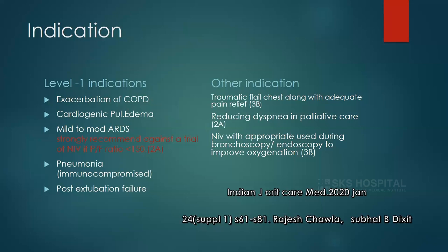For mild to moderate ARDS, note that moderate ARDS has a PF ratio between 100 and 200. When the PF ratio is less than 150, there is a high chance of NIV failure, so consider direct intubation rather than NIV. For pneumonia in immunocompromised patients, intubation increases the chance of infection and mortality, so BiPAP can be used initially until the patient decompensates. Post-extubation failure is also a level 1 indication for BiPAP.